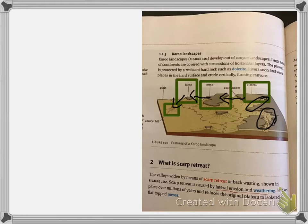So that's the things I want you to just focus on and understand. These are some of your most common questions in tests and exams. It will always be scarp retreat. You must be able to explain it through giving a diagram or just a normal explanation. And then you have to be able to identify your plateau, mesa, butte, conical hill, and explain...